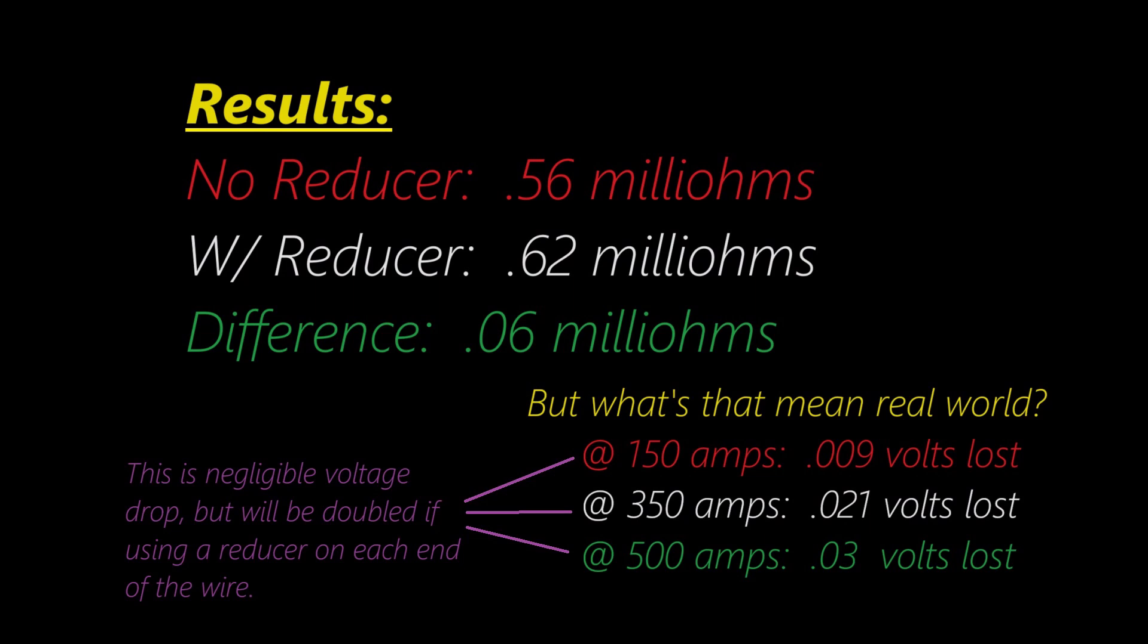So here's the breakdown. Not using a reducer, we were testing at .56 milliohms. Whereas with the reducer, we were at about .62 milliohms. That's a difference of .06, and broken down using Ohm's law,